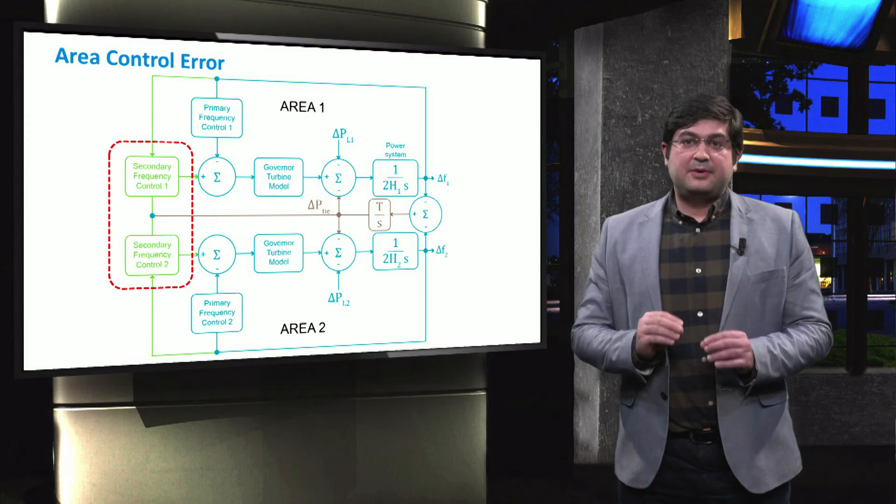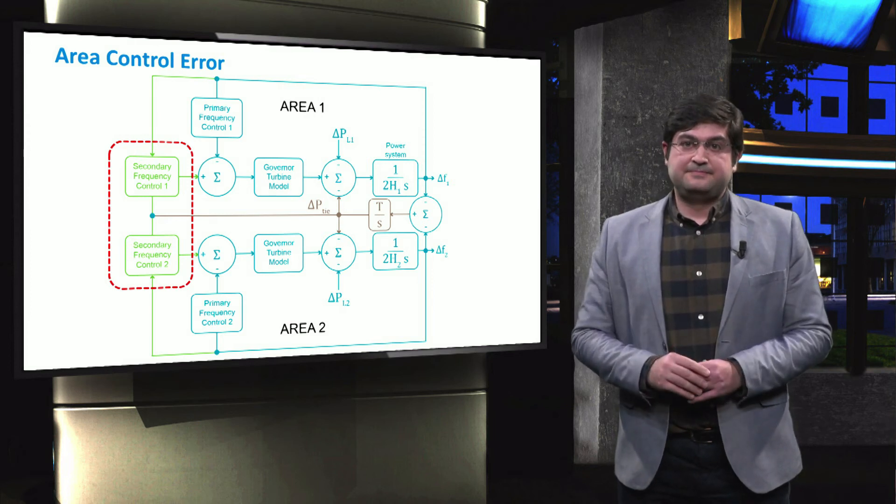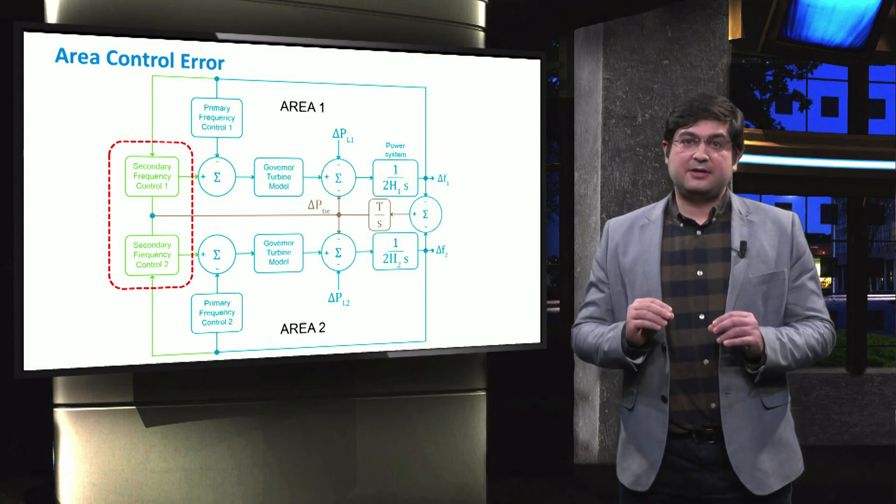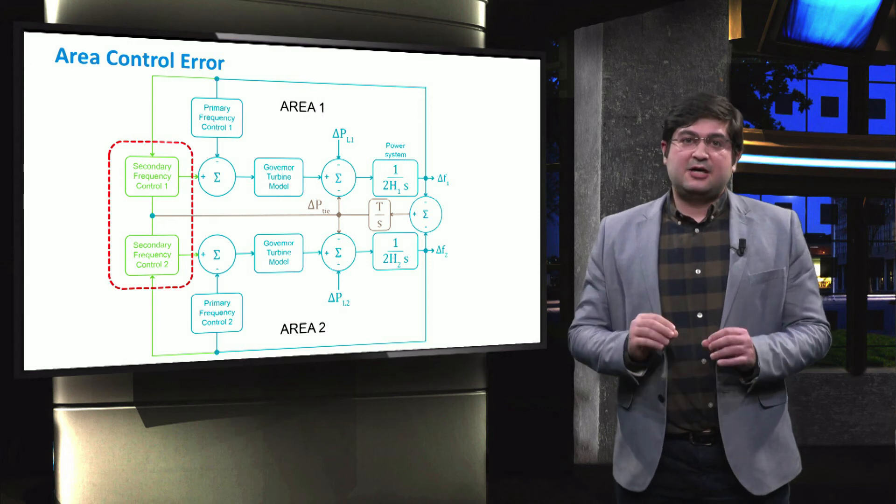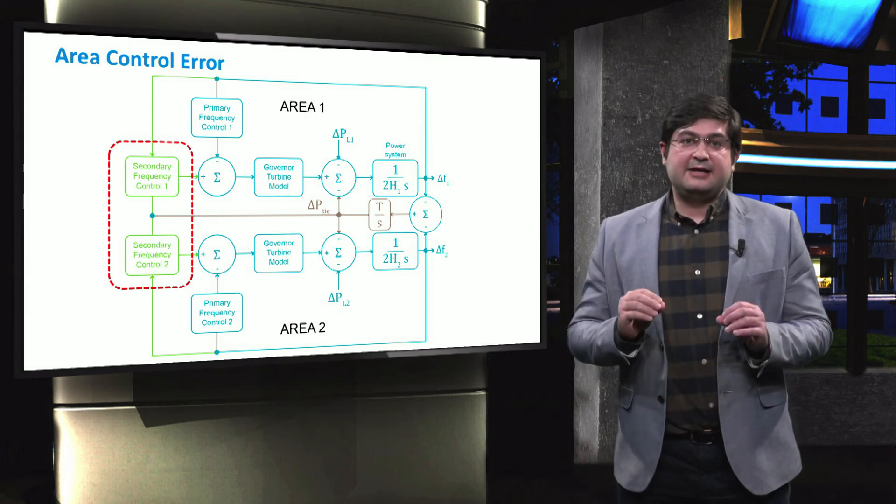For each area, a bias constant is considered. The typical choice of these bias constants is the sum of the load variation and the primary regulation.